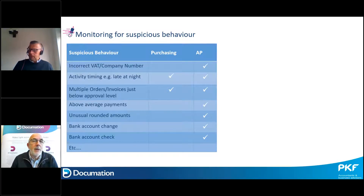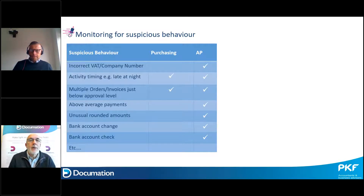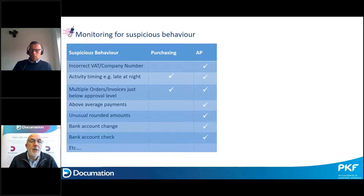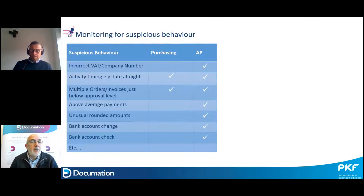Some examples: late-night activity — with a manual system this is really hard to spot, but when authorization occurs within a software system everything gets audited and time-stamped. Robots can be trained to highlight activity happening at unusual times, and if your finance director often works late you can change the rules for that person so their activity isn't flagged unnecessarily. Robots can also spot unusual rounded amounts or frequent above-average payments to particular suppliers by looking at past history for a particular transaction or supplier.